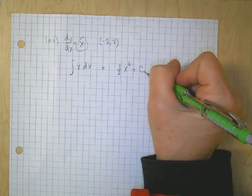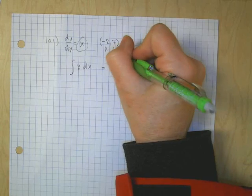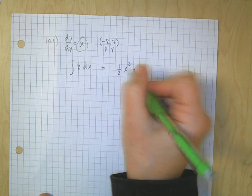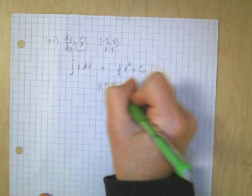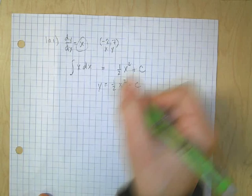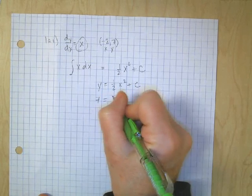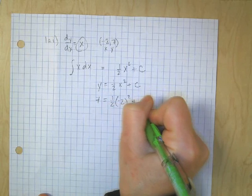Now in order to solve for c, I'm going to have to plug in my values here for x and y. So we could write this as y equals 1 half x squared plus c, and now I'm going to substitute in my values for x and y. So y is 7, 1 half, negative 2 squared, plus c.